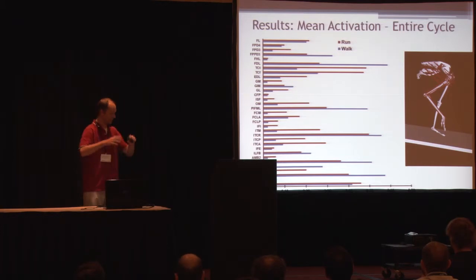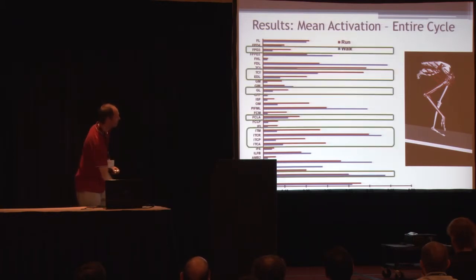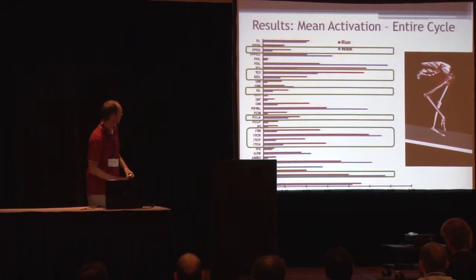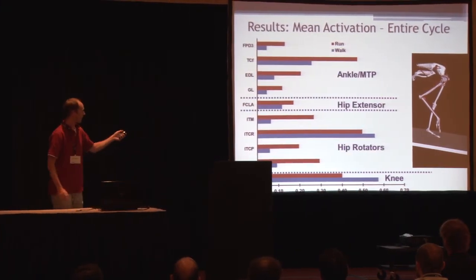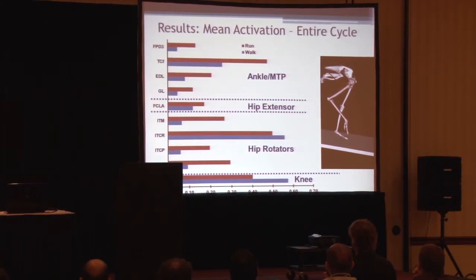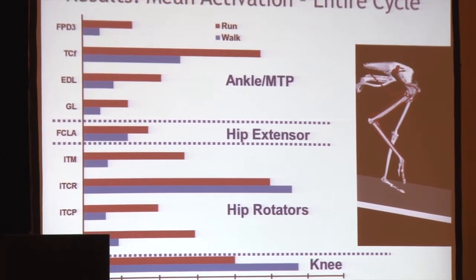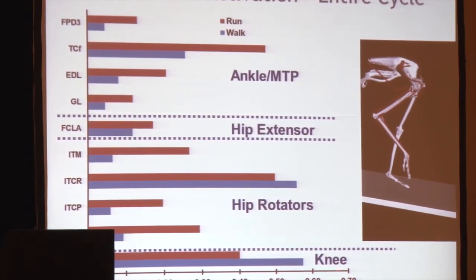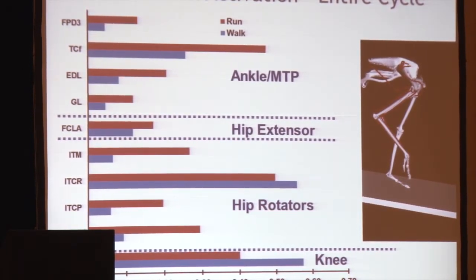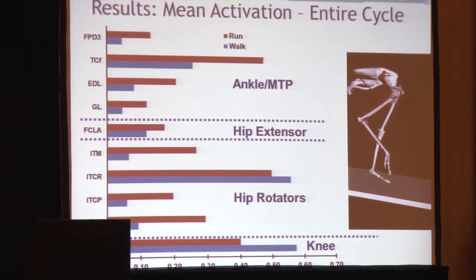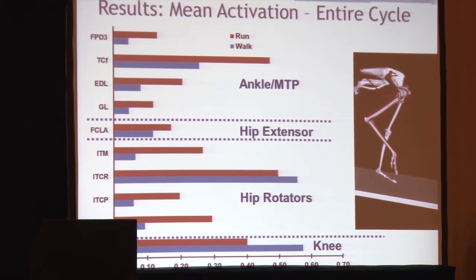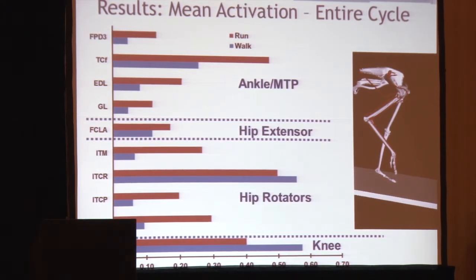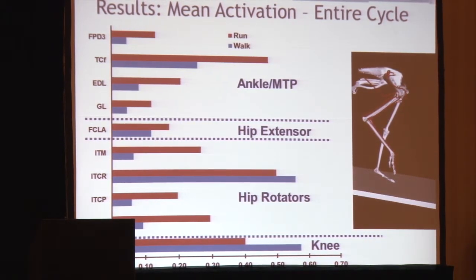So let's look at the results. This looks really big and messy, and I just want to focus on a couple of the muscles here. If we look at these in particular, what we have here is at the top we have our ankle and MTP extensors and flexors. Here we have a hip extensor, some hip rotators, and a knee extensor. What I want you to get from this slide more than anything is that in general, as we would expect, and this is kind of a model verification step, in running, activity of most of the muscles goes up, which is quite intuitive, considering that the demands on the joints are increased during running at higher speeds.